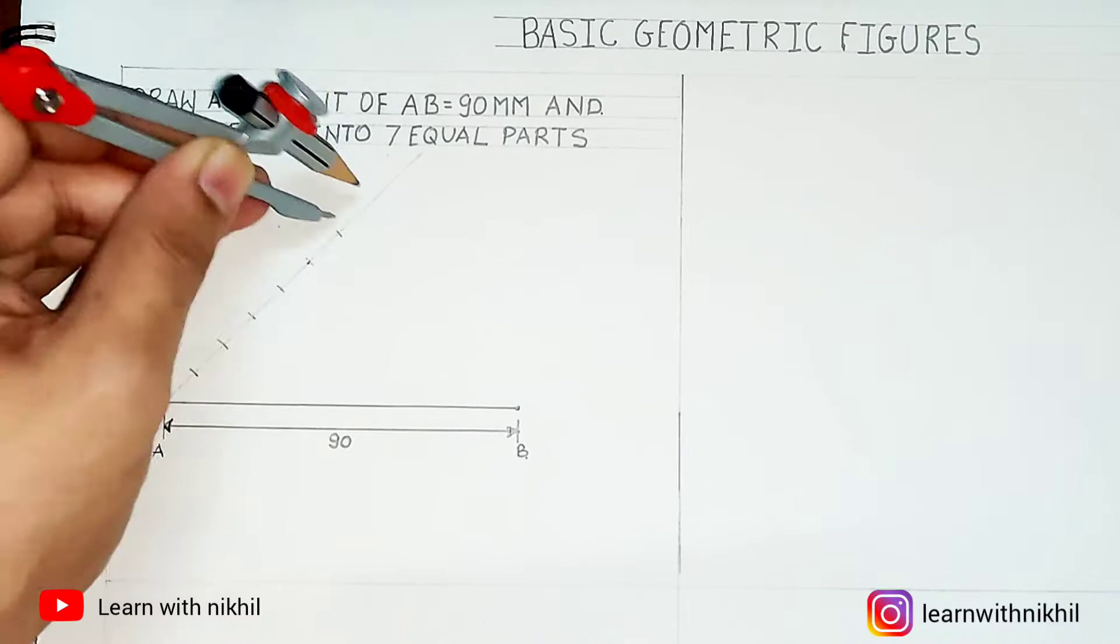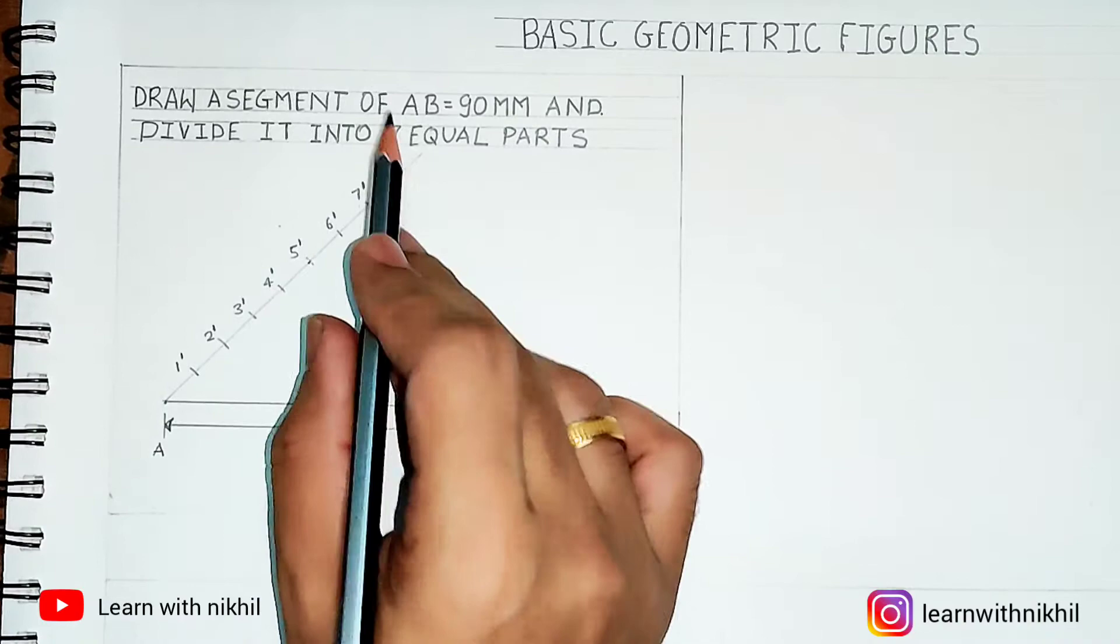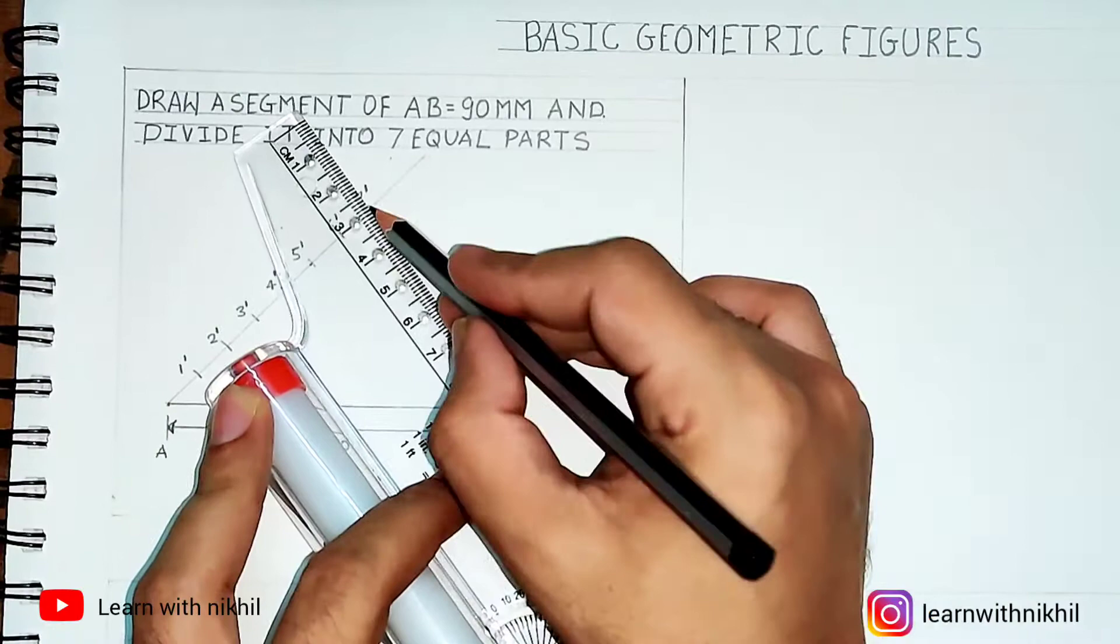So I'll take any distance on the compass and divide this 45 degree line into seven parts. The distance should be the same. If you have been asked to divide into eight equal parts, you have to mark eight points on this 45 degree line.